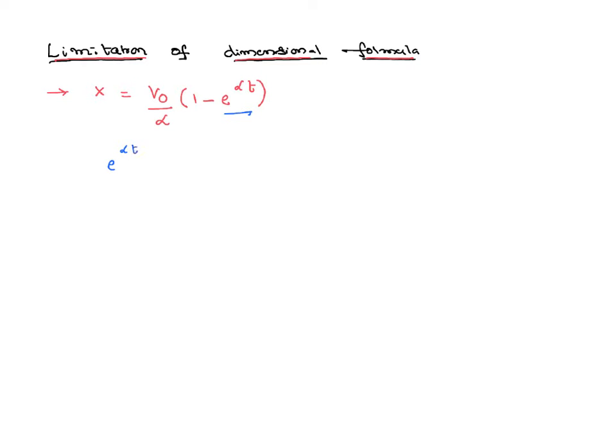So e power alpha t is having dimensions of m power 0, l power 0, t power 0. That is nothing but equal to 1. That means the dimensions of alpha and t is equal to 1. So alpha has a dimension of 1 by t, or nothing but time inverse.